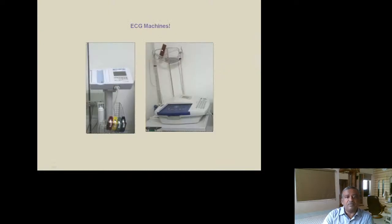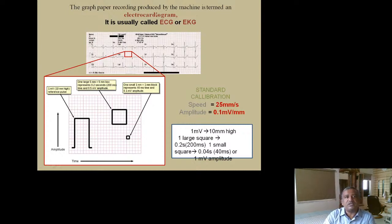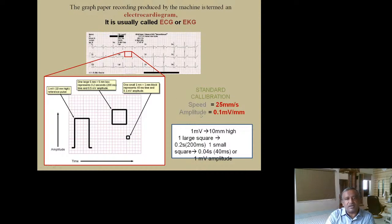The electrocardiograph is the machine, and the electrocardiogram is the tracing it produces — we call it ECG or EKG. Modern machines are computerized and measure PR interval, QRS, and QT interval. On the graph paper, one millivolt deflection equals 10 mm, one large square equals 0.2 seconds, and one small square equals 0.04 seconds. Normal recording speed is 25 mm per second, and amplitude is 0.1 mV per mm.